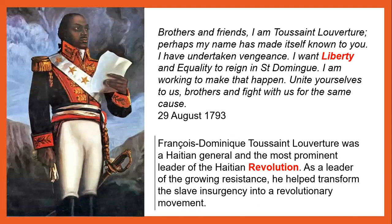'Brothers and friends, I am Toussaint Louverture. Perhaps my name has made itself known to you. I have undertaken vengeance. I want liberty and equality to reign in Saint Dominique. I am working to make that happen. Unite yourselves to us, brothers, and fight with us for the same cause.' That was written on the 29th of August 1793. Francois Dominique Toussaint Louverture was a Haitian general and the most prominent leader of the Haitian Revolution. As a leader of the growing resistance, he helped transform the slave insurgency into a revolutionary movement — remember that revolution means to overthrow a current government.